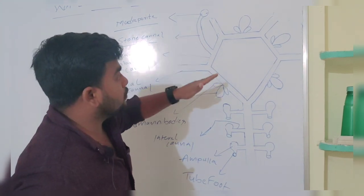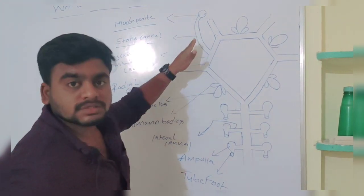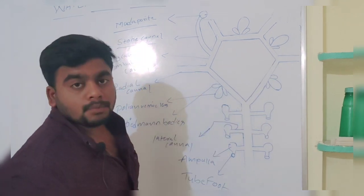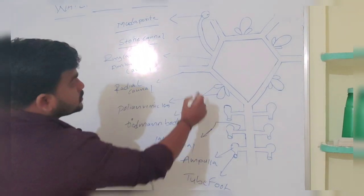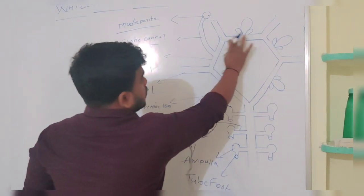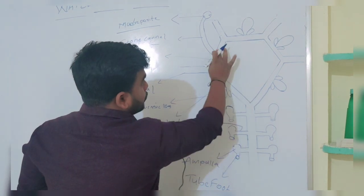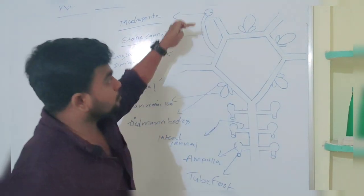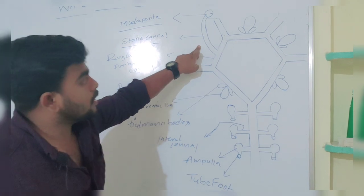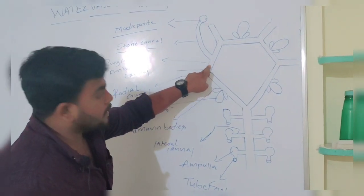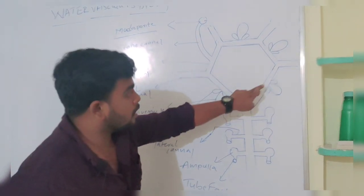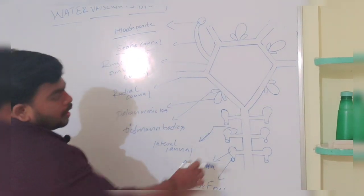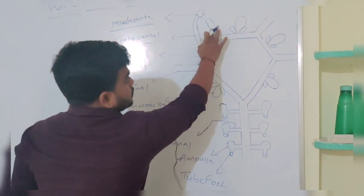The ciliated epithelium of the stone canal passes the water to the ring canal, also called the ambulacral canal. The water from the madriporite passes through the stone canal into the ring canal, and from there moves to the radial canals.